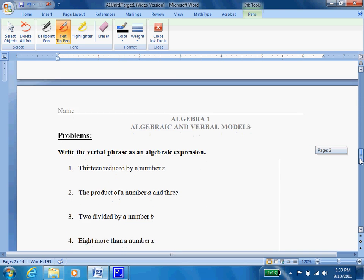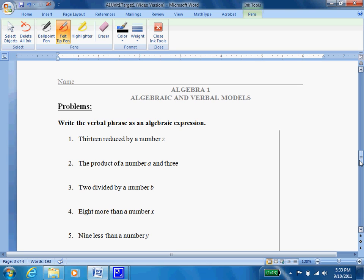We're going to start by writing the verbal phrases as algebraic expressions. And as we talked about in class, verbal phrases are words, and algebraic expressions use numbers and symbols. So we're going to go from words into numbers and symbols. The first one we have is 13 reduced by a number Z. So I see 13. I see reduced by. So I'm going to look at all my words, and I'm going to see reduced is a subtraction word. So I'll put a minus sign. And then a number Z. That's Z. So I write 13 minus Z.